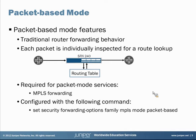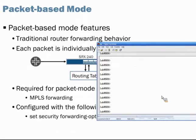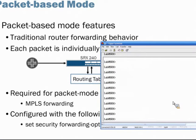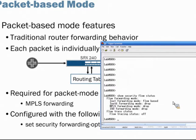Here we have an SRX device, and without even looking at the security hierarchy, there's an operational mode command to see what mode it's running in. That command is show security flow status. Looking at the output, the INET forwarding mode shows as flow-based. Note that the MPLS forwarding mode is set to drop, meaning MPLS traffic cannot be forwarded while the device is in flow-based mode.